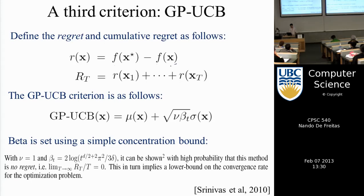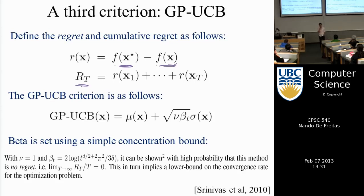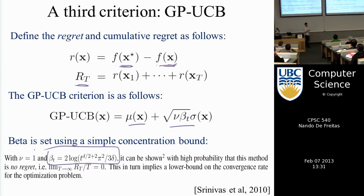A third approach uses a notion called regret — a theoretical computer science approach. Regret is the difference between the function at the optimum and the function at your chosen x. Cumulative regret is the sum of all your regrets. Through theory (not covered in this course), you can derive the trade-off between mean and variance. But it's not a constant — theory predicts it will be something that increases as log(t).